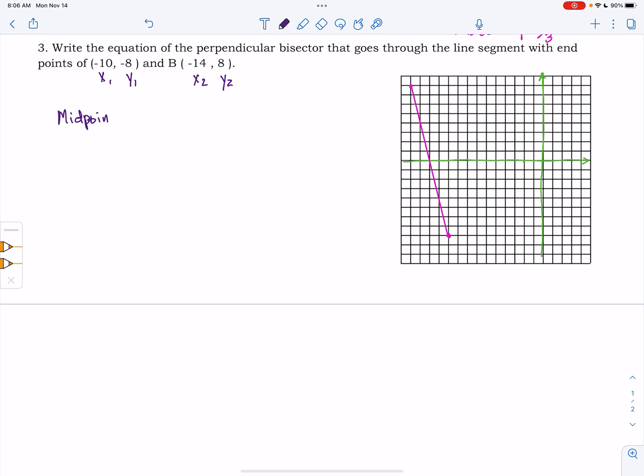And remember that the midpoint formula is the average of the x's, so x1 plus x2 over 2, comma, the average of the y's, y1 plus y2 over 2.